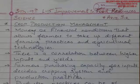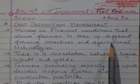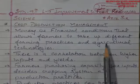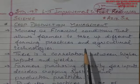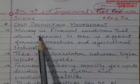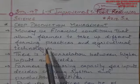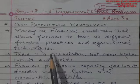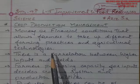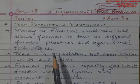In Crop Production Management, money and financial conditions allow the farmers to take up different farming practices and agricultural technologies. Different technologies can be adapted from the market unless and until you don't have money, that is, a better financial condition.